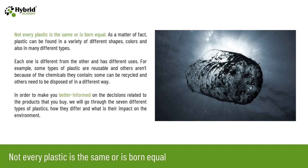Not every plastic is the same or is born equal. Plastic can be found in a variety of different shapes, colors, and also in many different types. Each one is different from the other and has different uses. For example, some types of plastic are reusable and others aren't because of the chemicals they contain. Some can be recycled and others need to be disposed of in a different way. We will go through seven different types of plastics.